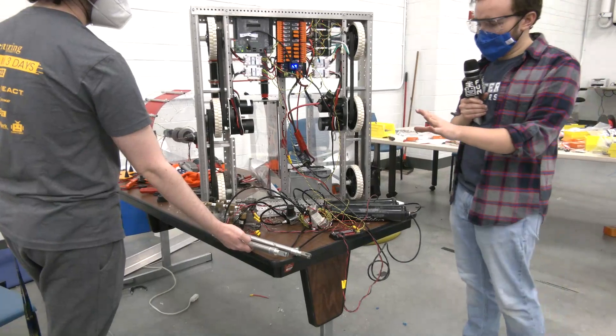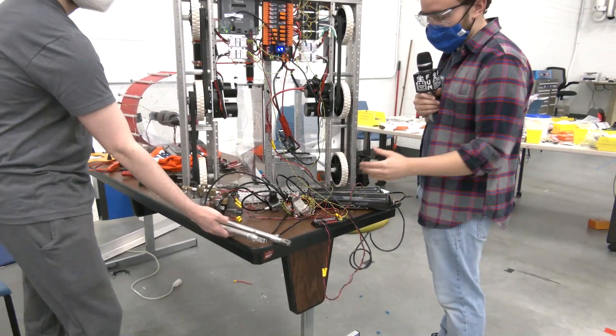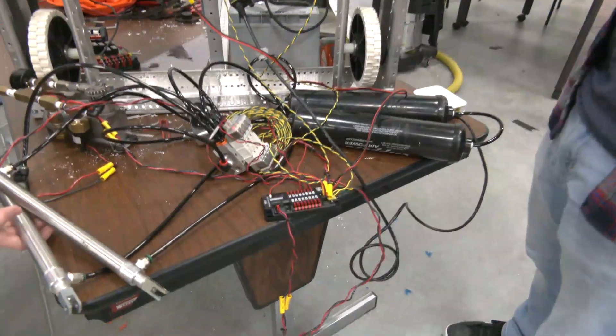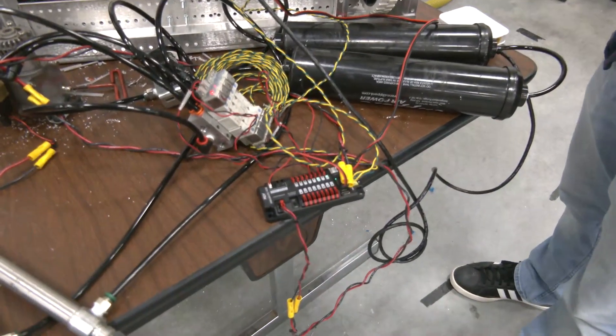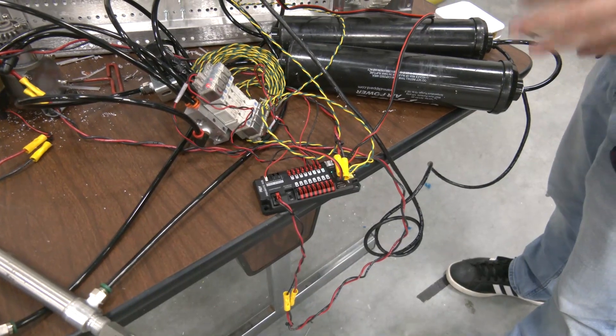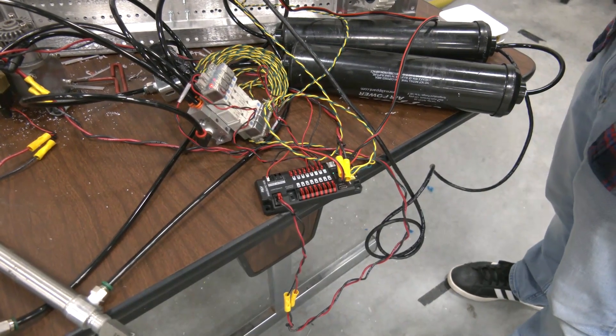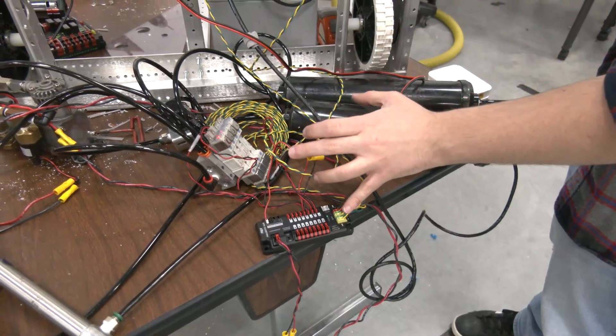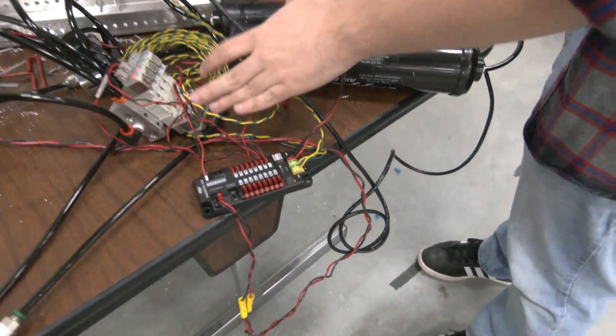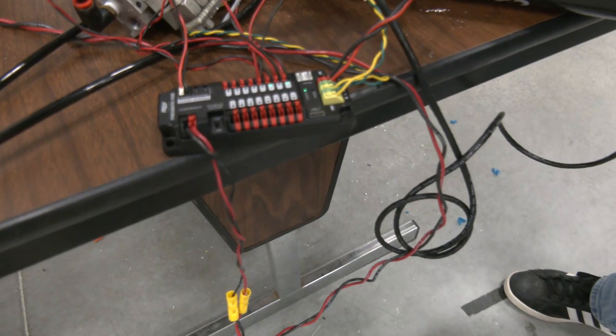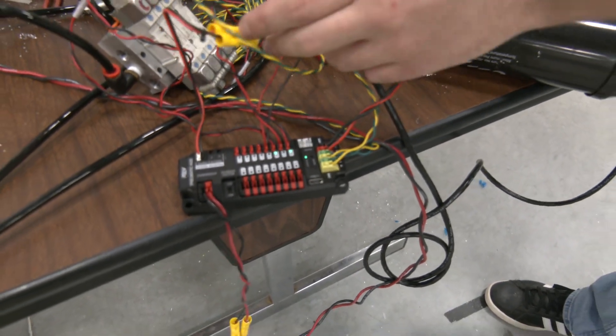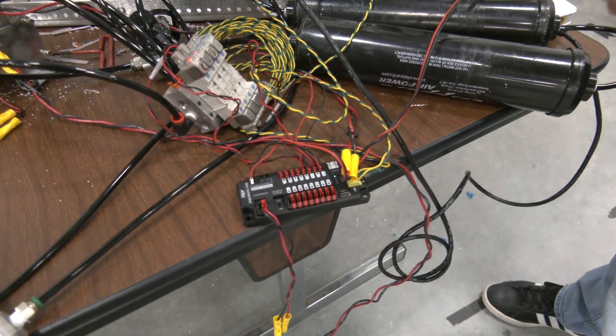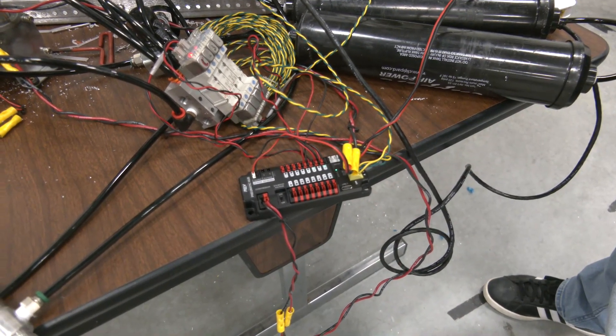We are also making use of, new for this year, the REV pneumatic hub. This is replacing on our design previous uses of the pneumatic control modules. The REV pneumatic hub goes with a lot of REV's new electrical systems with such new features as a USB-C port for us to diagnose the CAN and check some functionality of our components. We have a switch now to move from 12 to 24 volts where it was previously a connector that had to be pulled out and pulled in.